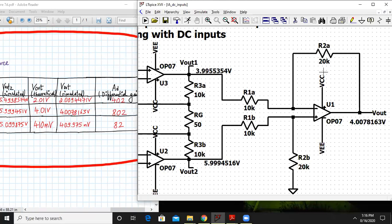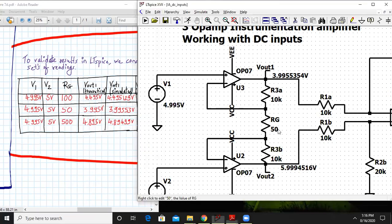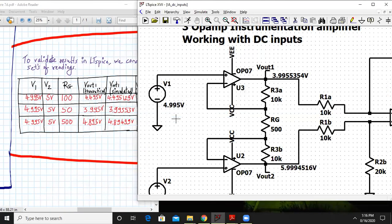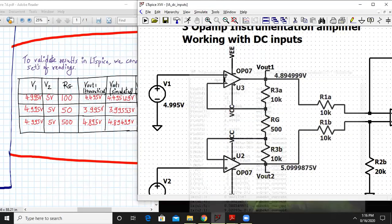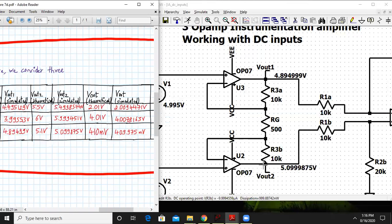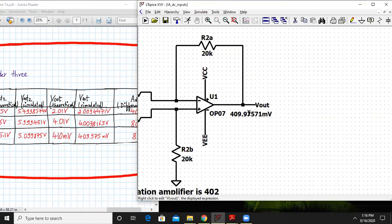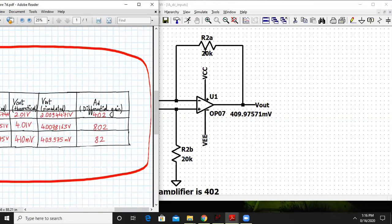Now we'll consider RG value as 500. Let's change the RG value to 500 and see what happens. Simulated value of Vout1 is 4.89499 and theoretically we're getting almost same. Simulated Vout2 is 5.099 and theoretically it's 5.1. The output voltage is 409.9 mV and theoretically 410 mV. So that's quite good accuracy.